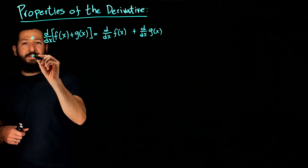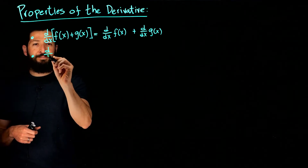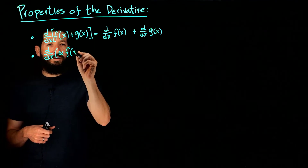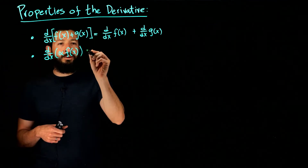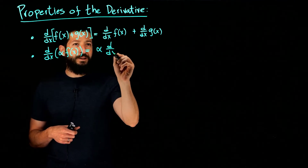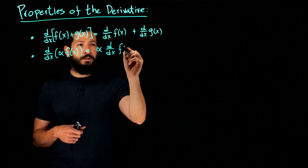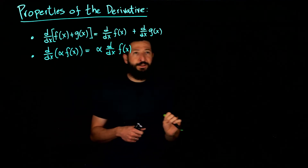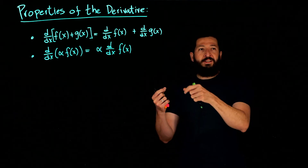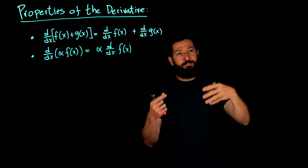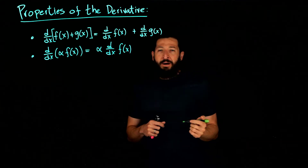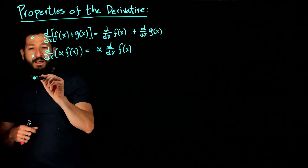The next linearity property: if you have a constant alpha times a function f, you can pull that constant out and take the derivative just of f(x). This allows us to simplify things like a polynomial, where you have a constant times a power of x, by splitting it and focusing on the powers of x.